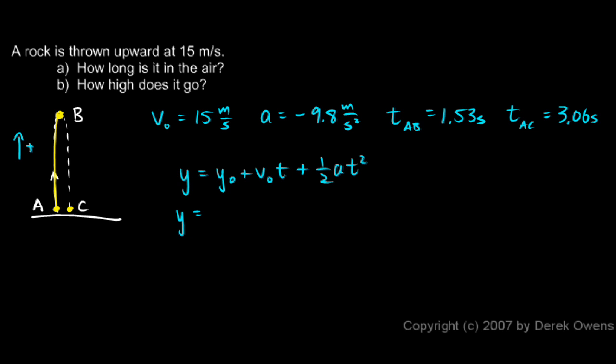y, and this will be the height at the peak at point B, will equal the initial height, and that's just zero. I'm not even going to write that, I'll just put in zero. Plus v₀t, that's 15 meters per second times my time of 1.53 seconds.